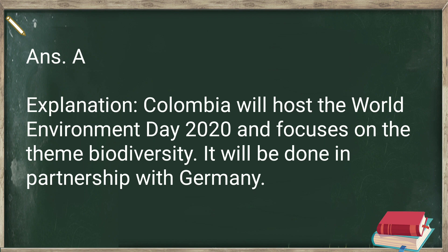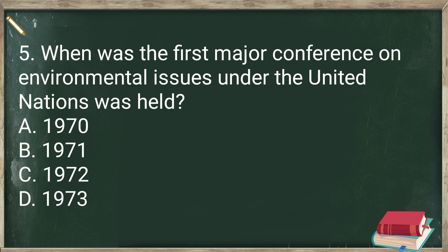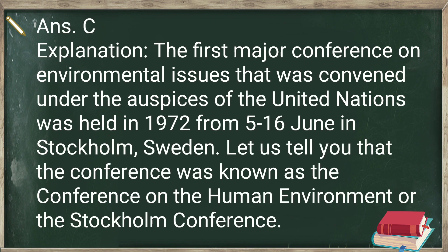When was the first major conference on environmental issues held under the United Nations? It was held in 1972. The first major conference on environmental issues convened under the auspices of the United Nations was held from 5th to 16th June 1972 in Stockholm, Sweden. The conference was known as the Conference on the Human Environment, or the Stockholm Conference.